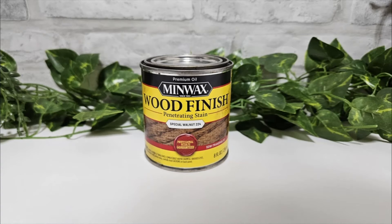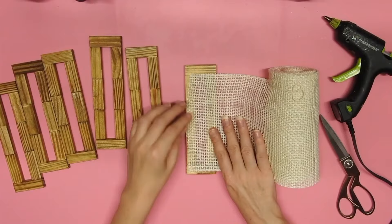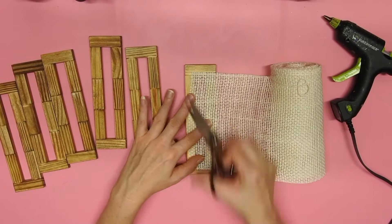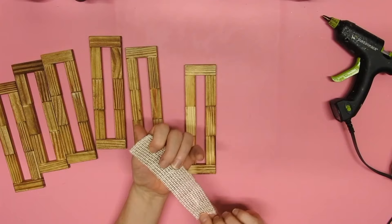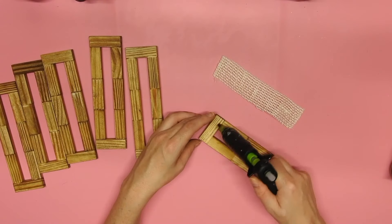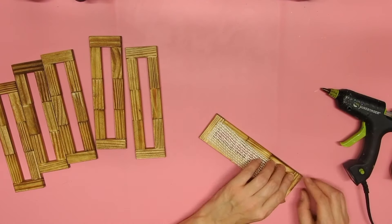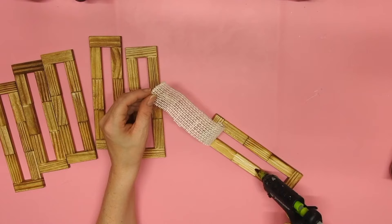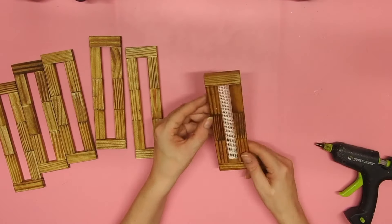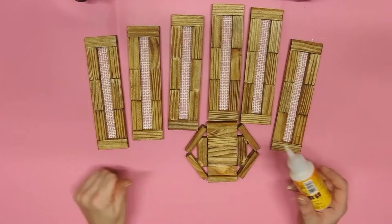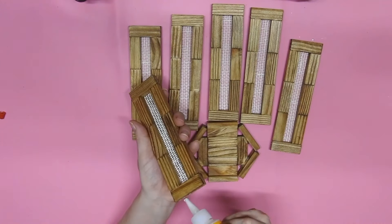I stained all the pieces with some Minwax in the color special walnut and I have some cream burlap from Walmart so I'm just gonna cut it down and then hot glue it on the inside of each of these pieces. Just watch don't burn your fingers and now I am going to glue it all together.